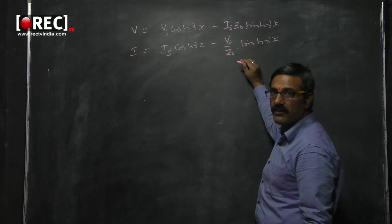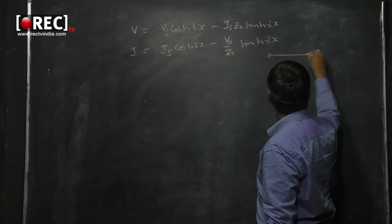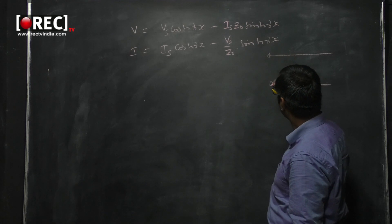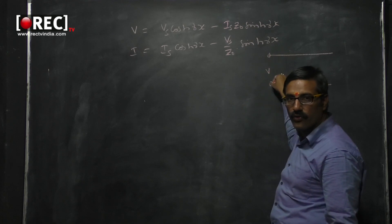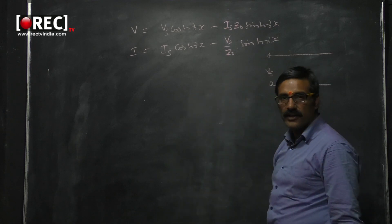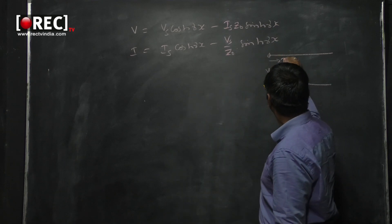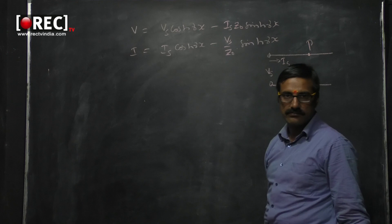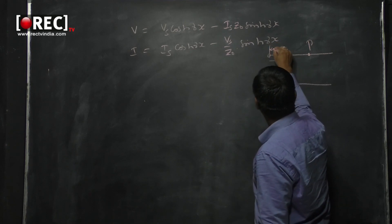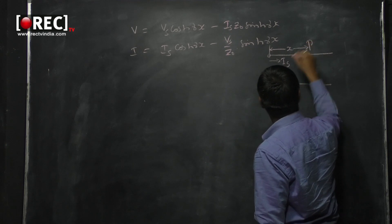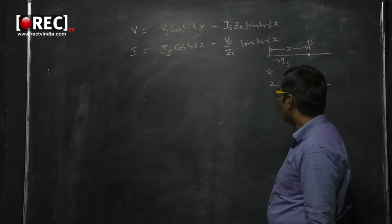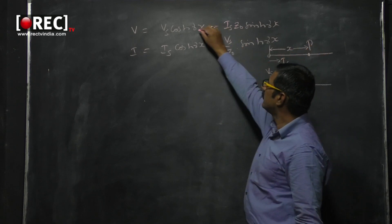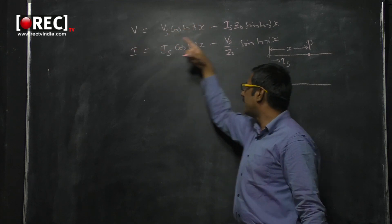Looking at the schematic diagram of the transmission line: the voltage between the source terminals is Vs and the current is Is. We take an arbitrary point P on the transmission line whose distance is x units from the input or source terminals.